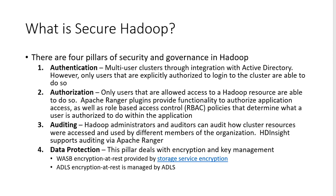Pillar number three is auditing. Hadoop administrators and auditors can audit who and how the cluster resources are being accessed and maintained. HDInsight supports auditing via Apache Ranger. The last pillar is data protection, which deals with encryption and key management. We have WASP encryption provided by Storage Service Encryption, and ADLS encryption managed by ADLS — those are the two options we have. Remember the four pillars around Hadoop as we move on.